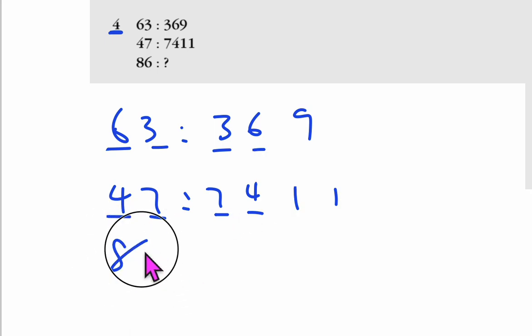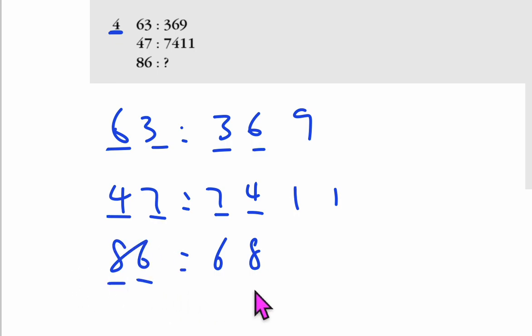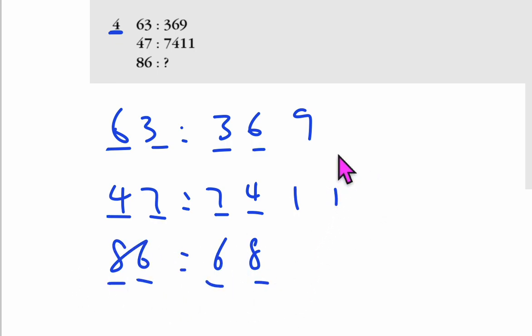And then after that, your 8, 6, right? I'm thinking you just reverse the 6 and 8. And how you get the 9 here is add, right?